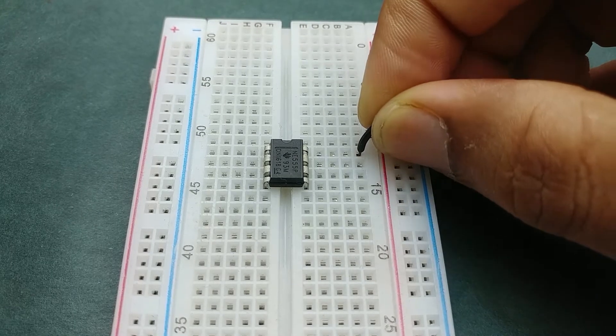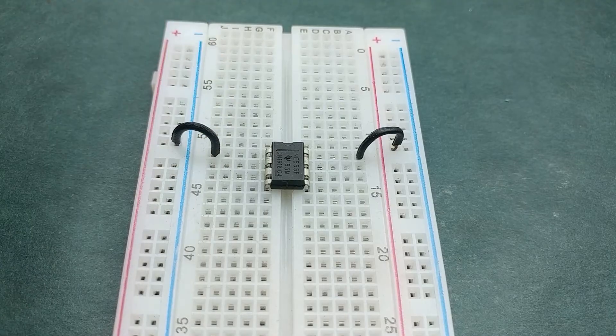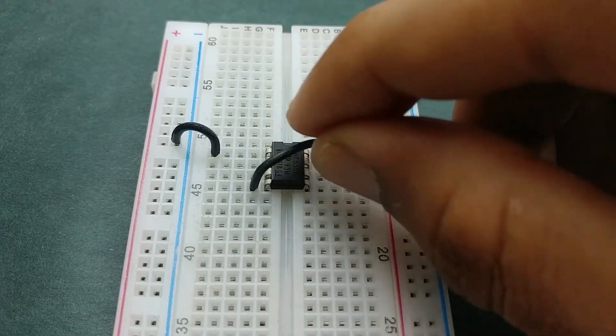Connect pin 4 of the IC to positive rail and pin 1 to negative rail. Connect the reset pin which is at pin 4 to pin 8.